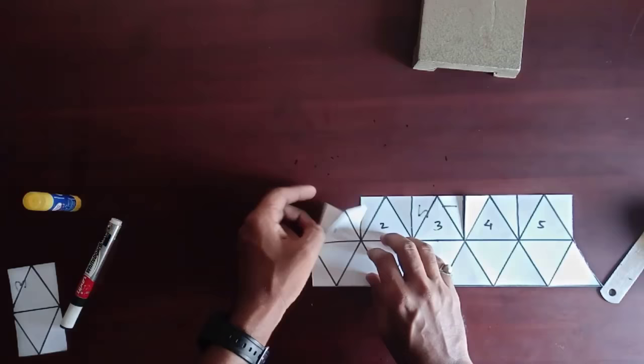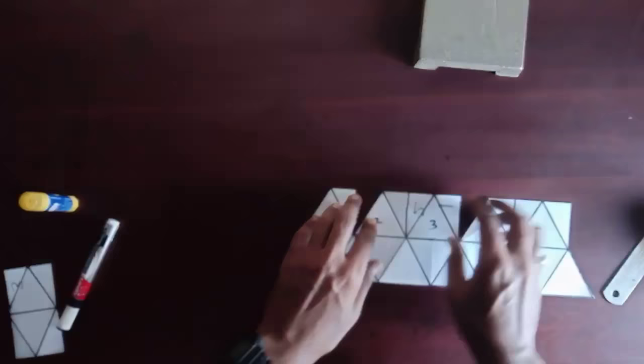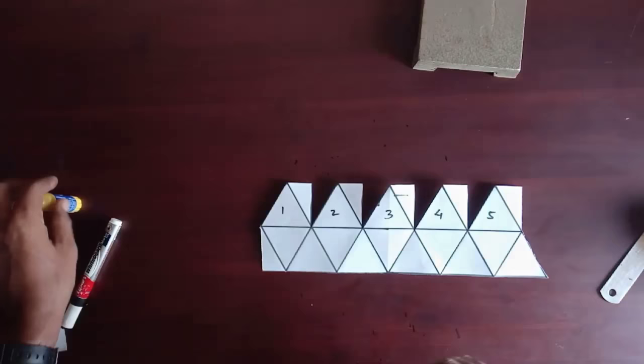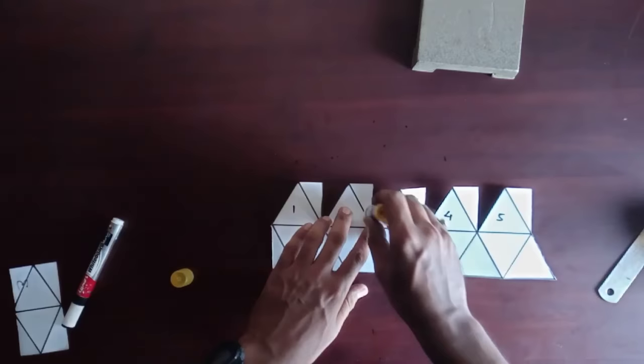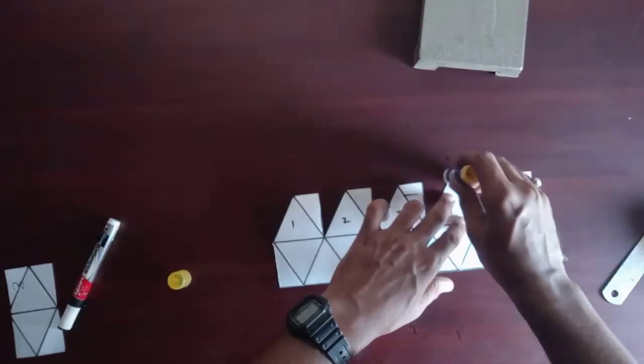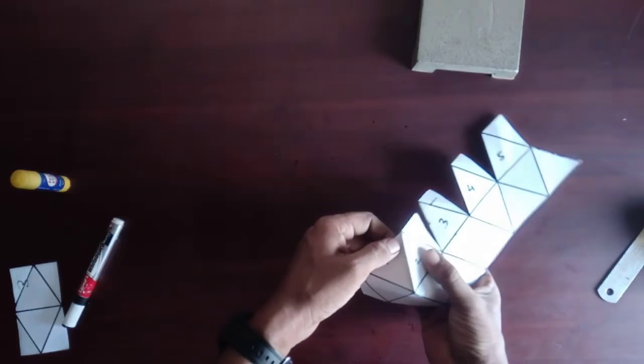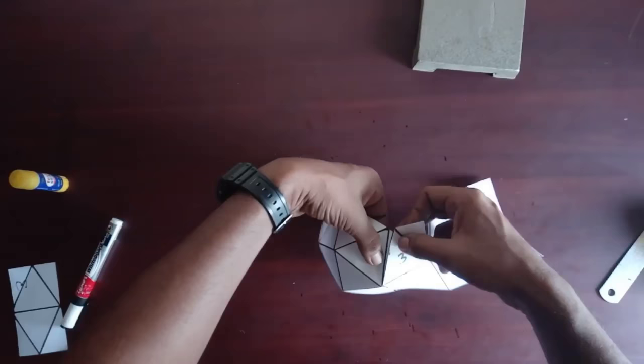Now you can see that each triangle has 2 flaps. Fold 1 flap of each triangle inside like this. Apply glue on the remaining flaps. Now join these triangles with one another by pasting the flap of one triangle under the other triangle.